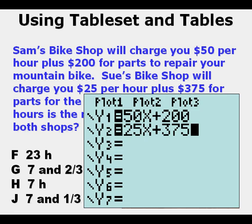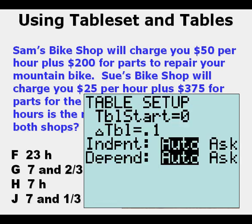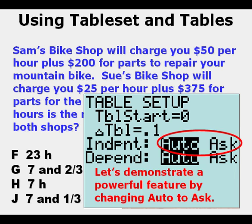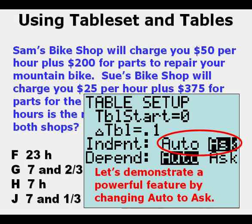We can go to our y equals view and use our basic knowledge of algebra to put the functions representing both bike shops—Sam's bike shop under y1 and Sue's bike shop under y2. From here we can go to our table set mode and use a very powerful feature in our graphing calculator. We can change the independent row from auto to ask.